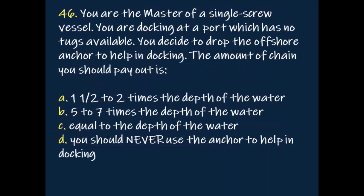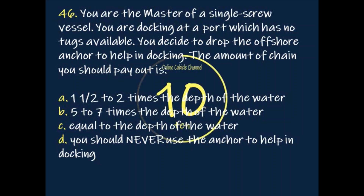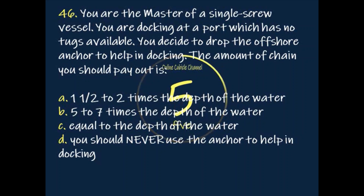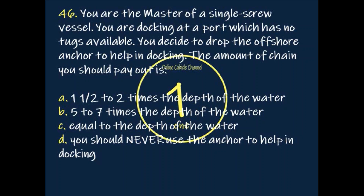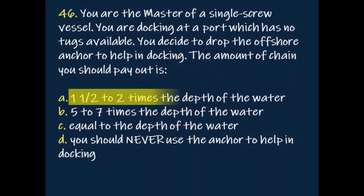Question: You are the master of a single-screw vessel docking at a port which has no tugs available. You decide to drop the offshore anchor to help in docking. The amount of chain you should pay out is? Answer: One and a half to two times the depth of the water.